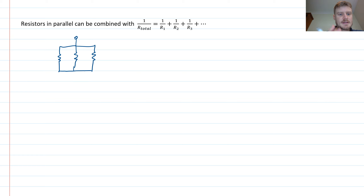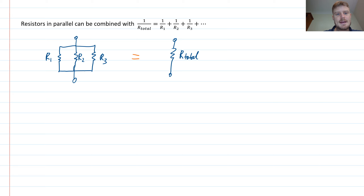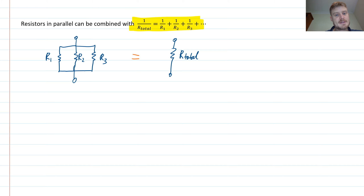Looking at this simple network of three resistors, if I write down the values as R1, R2, and R3, I can replace these in my circuit analysis with a single resistor called R total. You might also see this called R equivalent for the equivalent resistance, and it's given by the equation shown here. This is an important equation — you need to memorize it and recognize this pattern so that when you see resistors in parallel, you can simplify them into an equivalent resistance.